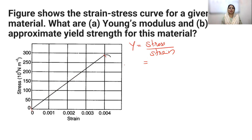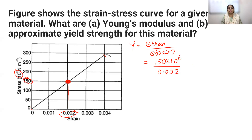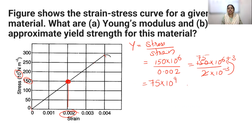From the graph, reading the stress value as 150 × 10⁶ and the corresponding strain as 0.002, we calculate Young's modulus as 150 × 10⁶ divided by 0.002, which equals 150 × 10⁶ divided by 2 × 10⁻³. This gives us 75 × 10⁹.